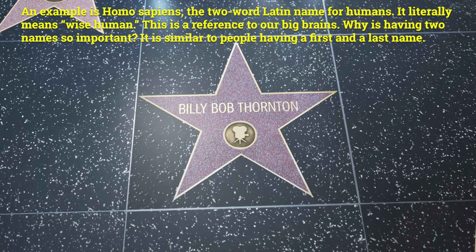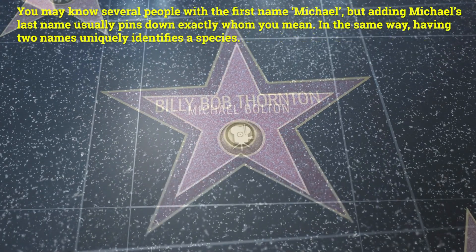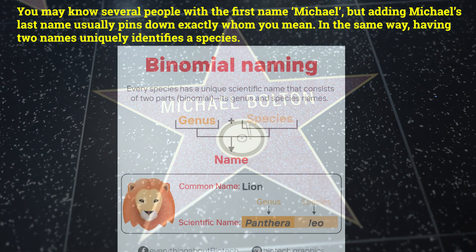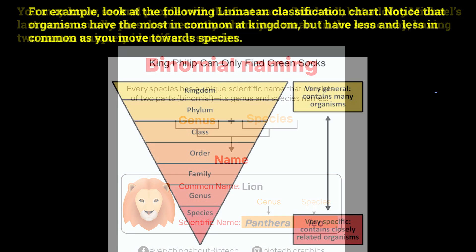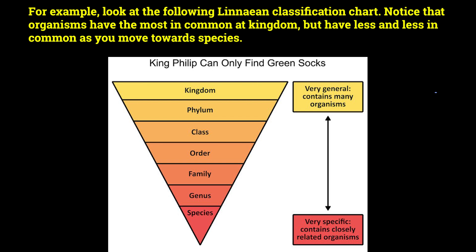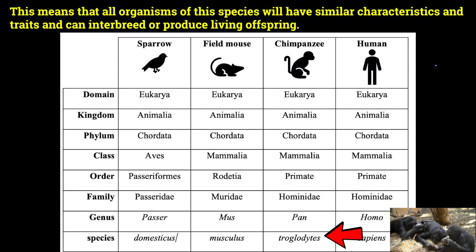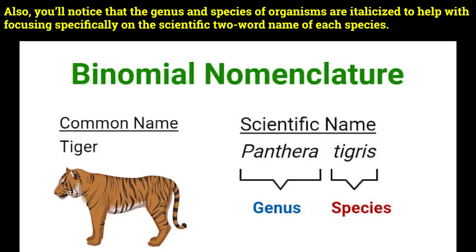Why is having two names so important? It is similar to people having a first and a last name. You may know several people with the first name Michael, but adding Michael's last name usually lets you know exactly who you're talking about. In the same way, having two names uniquely identifies a species. Notice that organisms have the most in common at kingdom, but have less and less in common as you move towards species. The scientific name for a chimpanzee is Pan troglodytes — all organisms of this species share similar characteristics and can interbreed to produce living offspring. Also, the genus and species names are italicized to help focus specifically on the scientific two-word name of each species.